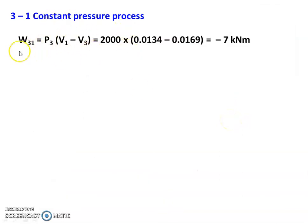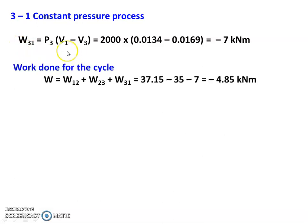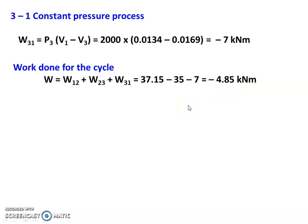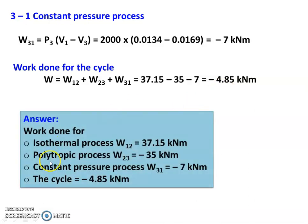For the constant pressure process 3 to 1: W31 equal to P3 into (V1 minus V3) equal to 2000 into (0.0134 minus 0.0169) equal to minus 7 kNm. Work done for the cycle: W equal to W12 plus W23 plus W31 equal to 37.15 minus 35 minus 7 equal to minus 4.85 kNm. Work done for the isothermal process 37.15 kNm, polytropic process minus 35 kNm, constant pressure process minus 7 kNm, net cycle work minus 4.85 kNm.